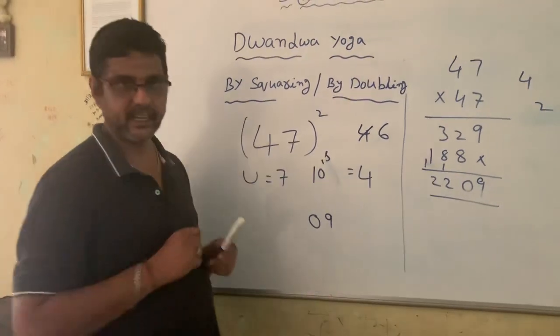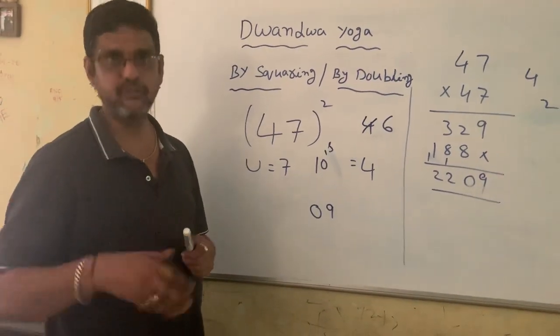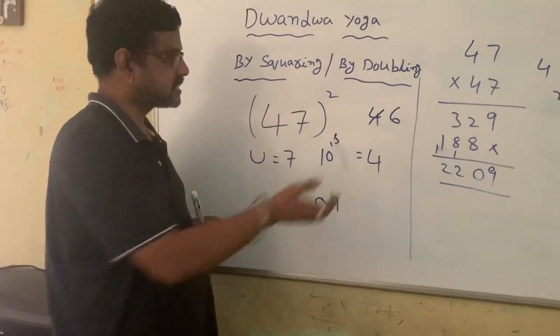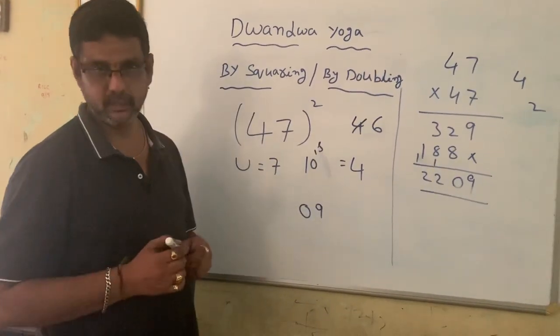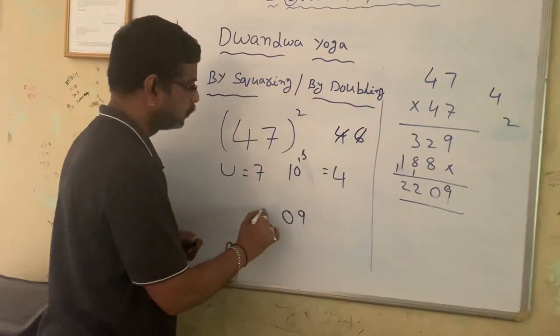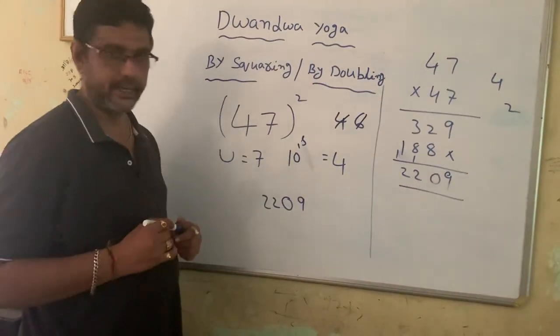Square the digit in tens place. That is 4 square which is 16. And 16 and leftover number, 16 plus 6. That is 22. And write the 22 over here.